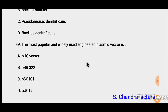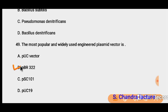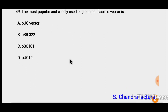Question 49: The most popular and widely used engineered plasmid vector is PBR 322. So the correct option must be B.